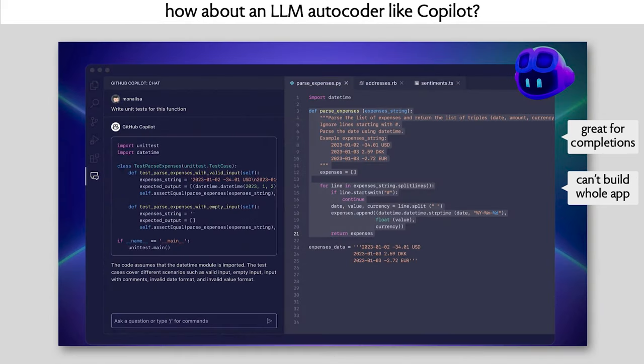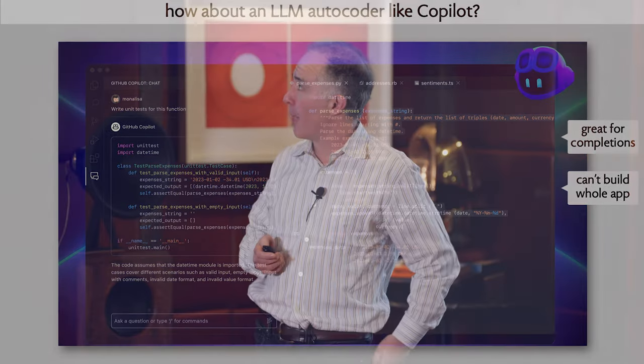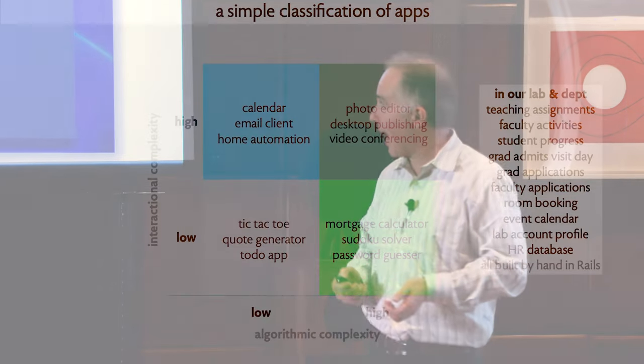What about LLM-based autocoders like GitHub Copilot? This is the hottest stuff, and programmers are very excited about it. It seems that this can roughly double the productivity of programmers. It's essentially a super auto-completion - a better tab button. You press tab in your integrated development environment, and it doesn't just give you the next word; it fills in the entire function for you. And very often, it fills it in incorrectly. The problem is you can't actually build a whole app with this. You still need to decide which files you're going to write, what you're going to put in those files, and how they're all going to connect together.